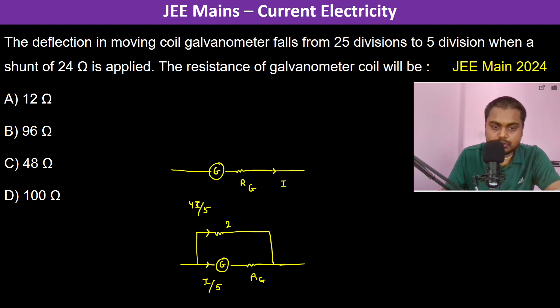Now this is 24 ohms. Because both of them are in parallel, we can write that the potential difference is going to be the same. So 4I/5 times 24 ohms should be equal to...